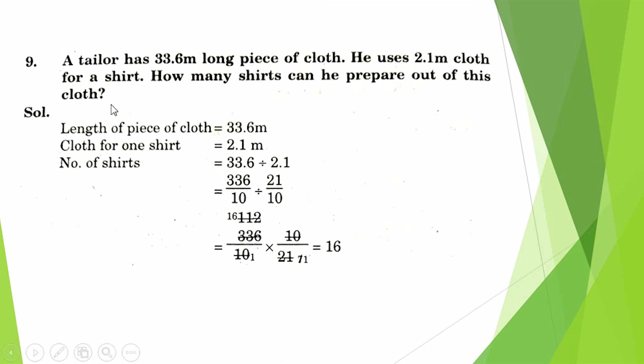Question number 9: A tailor has 33.6 meter long piece of cloth. He used 2.1 meter cloth for a shirt. How many shirts can he make out of his cloth? Length of piece of cloth: 33.6. Cloth for one shirt: 2.1 meter. Number of shirts: 33.6 ÷ 2.1.